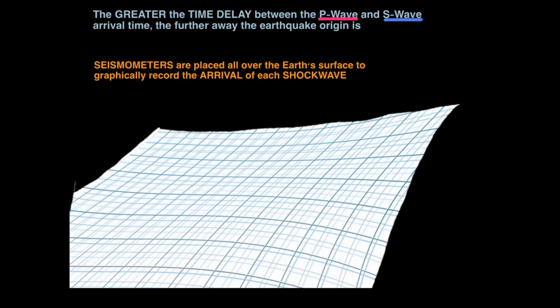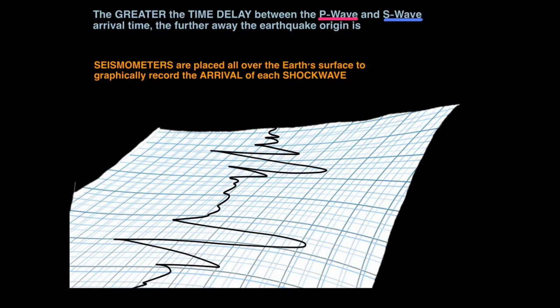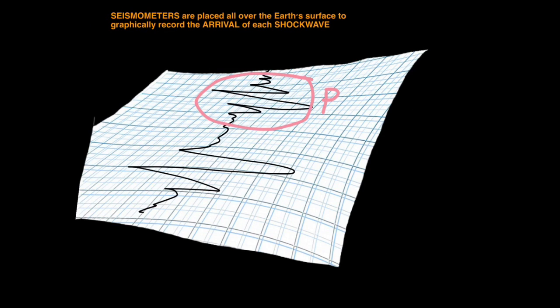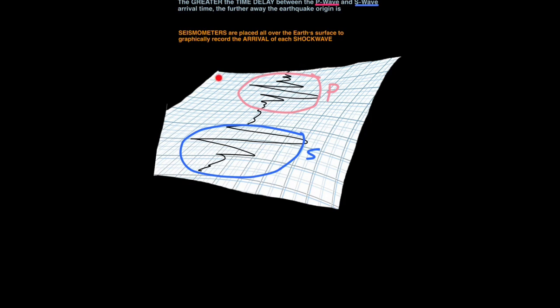One way in which our understanding of P waves and S waves is useful is we know that the greater the time delay between the arrival of the P wave and S wave, the further away the earthquake origin is. We use seismometers, which we place all over the Earth's surface to graphically record the arrival of each shock wave. I'm sure you've seen these before in films. Basically, it's just a hanging needle over some graph paper, and what happens as they detect a tremor, they start to draw a line. And you can see they look a bit like this. This section here is our P wave. Then after a short delay, we have our S wave over here. This data can help us locate the origin of an earthquake, but I'll go on to that in the next section.